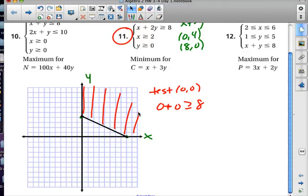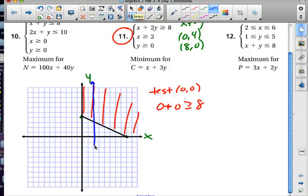Then the next constraint says x has to be greater than or equal to 2. That line, that vertical line, would be right there at x = 2. And then greater than or equal to means that I have to go out to the right. So I'm starting to see where that double shading is at right now.